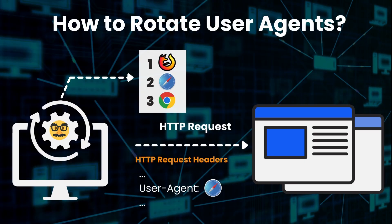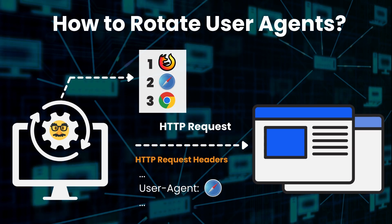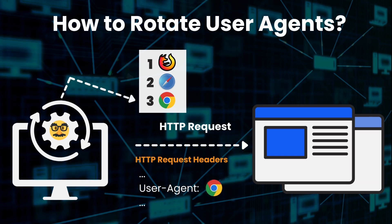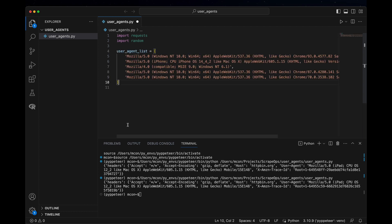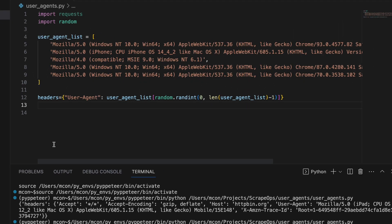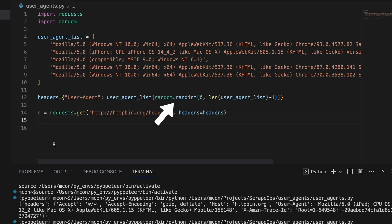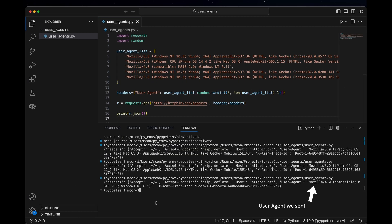How to rotate user agents: In the previous example, we only set a single user agent. However, when scraping at scale, you need to rotate your user agents to make your requests harder to detect. Rotating through user agents is also straightforward — we just need a list of user agents in our scraper and then use a random one with every request. This works, but it has drawbacks, as we would need to build and keep an up-to-date list of user agents ourselves.